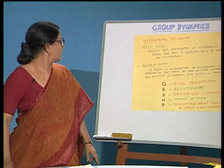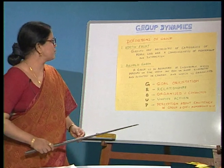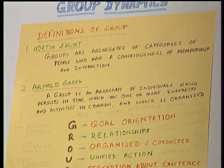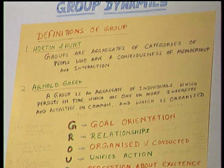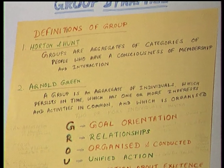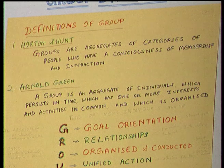It is generally said that two is a company, three is a crowd. But for the purpose of our discussion, we shall take two or more as a group. As a social being, a human being is born into groups, lives with groups, extends his groups, and continuously forms new groups. Horton and Hunt have defined groups as aggregates of categories of people who have a consciousness of membership and interaction. Annal Green has defined the group as an aggregate of individuals which persists in time, which has one or more interests and activities in common, and which is organized.